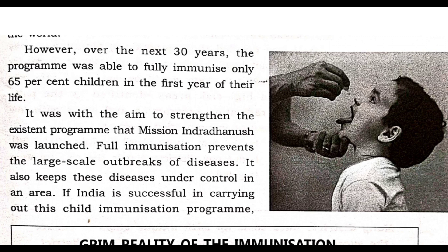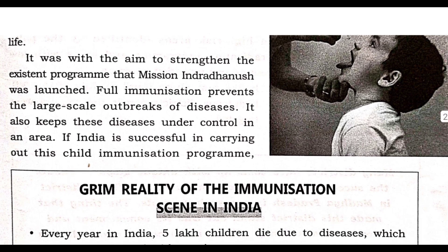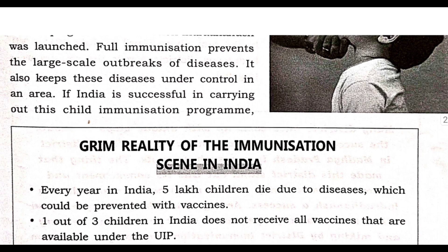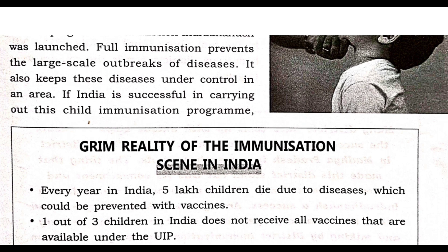The remaining 35 percent were not immunized. Mission Indradhanush was launched to strengthen the existing program and improve health quality. Full immunization prevents large-scale heartbreak diseases — just as we all suffered during the COVID-19 outbreak, losing friends and citizens. Doses of Covishield and Covaxin were given to prevent COVID-19.